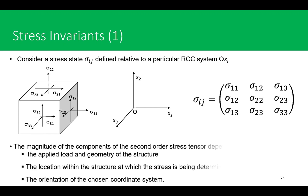The magnitude of each individual component of the second-order stress tensor depends on various factors: the geometry of the structure, the applied loading and how it is applied, the location of the infinitesimal material element, and also the orientation of the coordinate system.